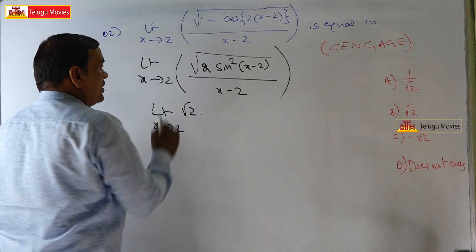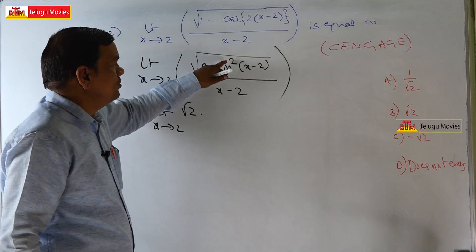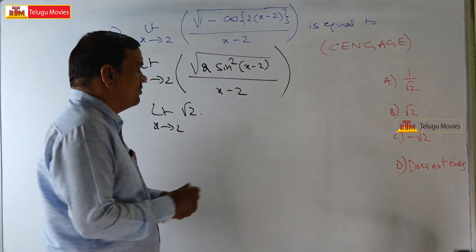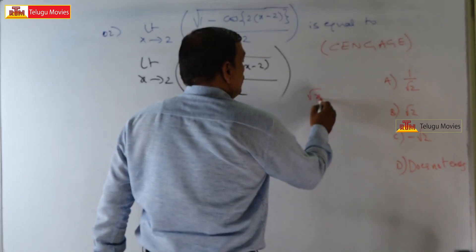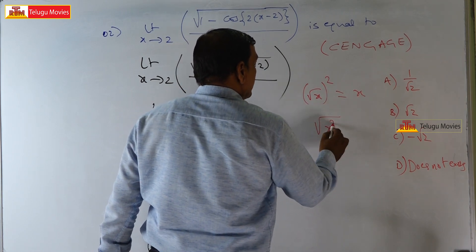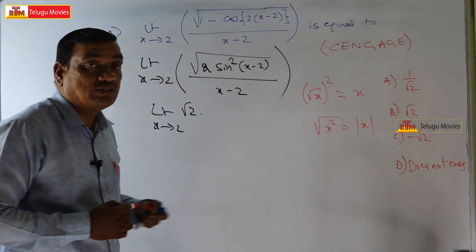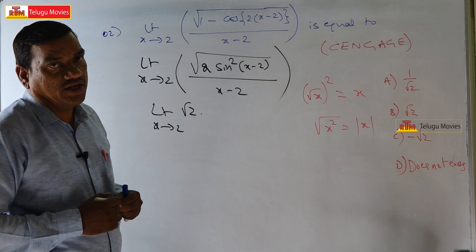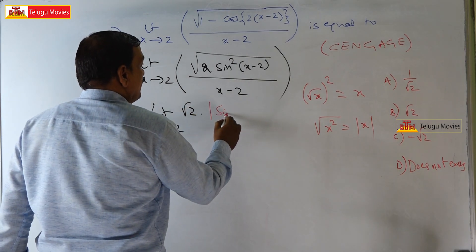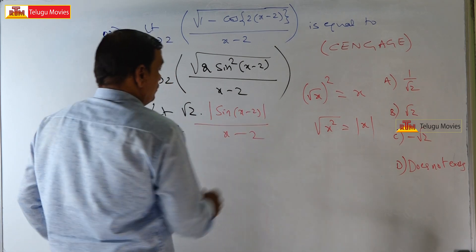We can write this as root 2. Now, students, the major mistake they make is thinking that square root and square cancel. That is wrong. Always remember: √(x)² = x, whereas √(x²) = |x|. So here it becomes root 2 × |sin(x-2)| / (x-2).